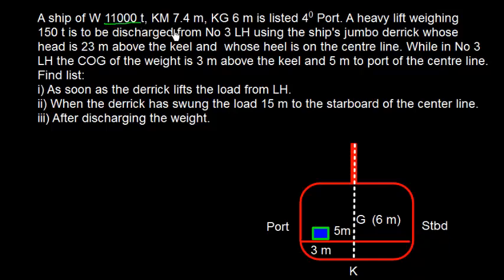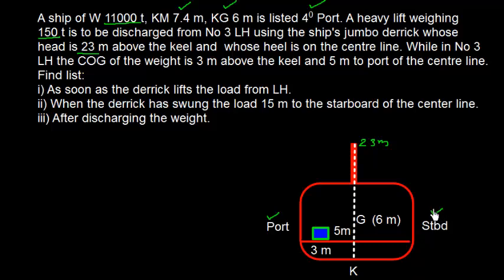A ship of 11,000 ton, KM 7.4 meter, KG 6 meter, is listed 4 degrees to port. A heavy lift weighing 150 ton is to be discharged from number 3 lower hold using the ship's jumbo derrick, whose head is 23 meter from keel. The COG of the weight is 3 meter above the keel and 5 meter to the port of the centerline.